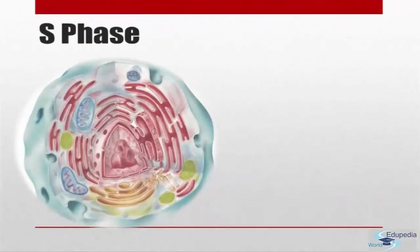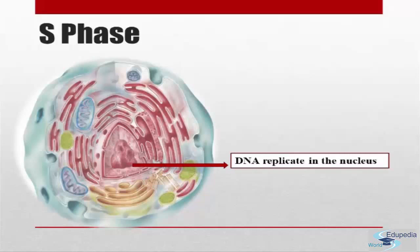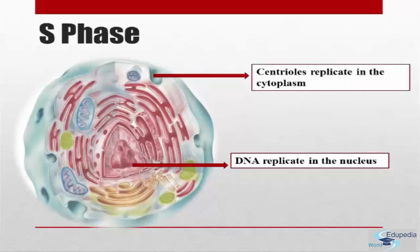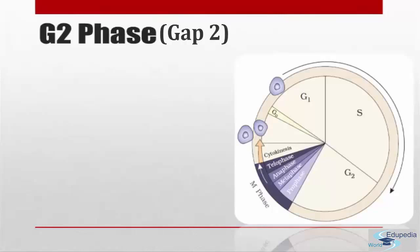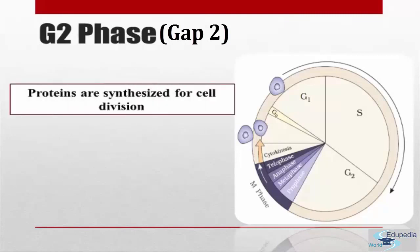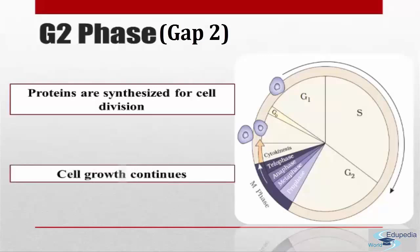In the S phase, DNA replication begins in the nucleus and the centriole duplicates in the cytoplasm. The next phase is the GAP2 phase, the G2 phase. Here, proteins are synthesized in preparation for mitosis and the cell continues to grow.